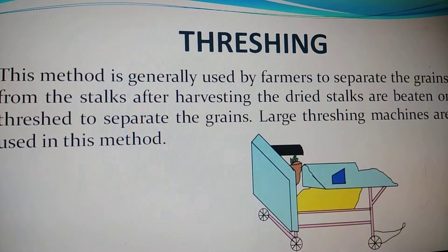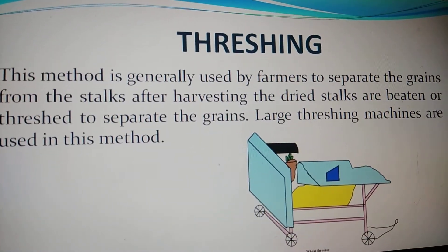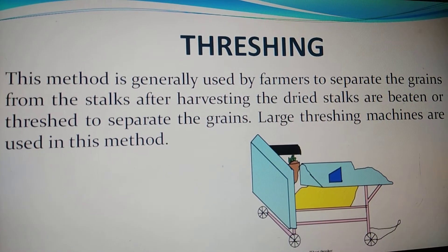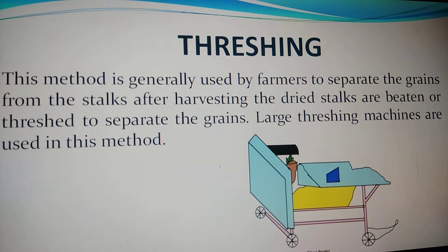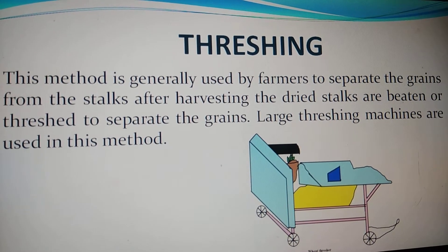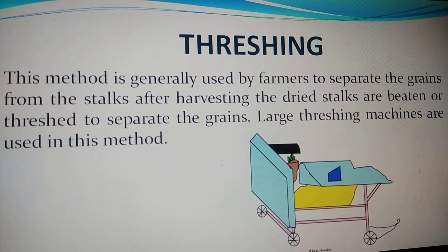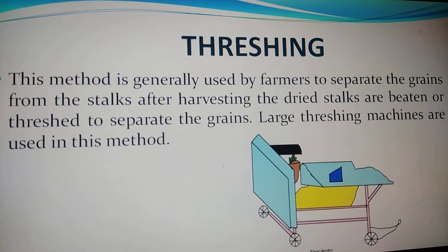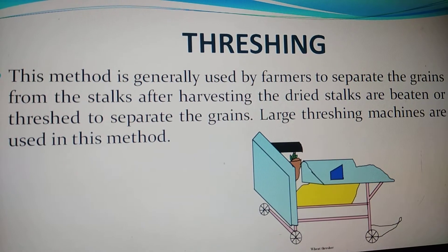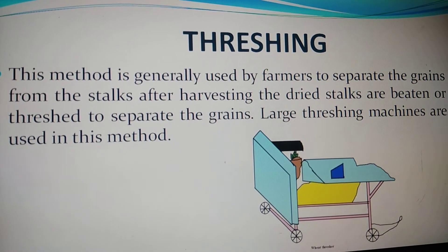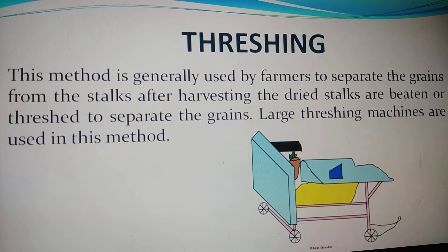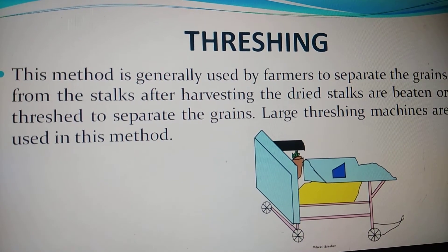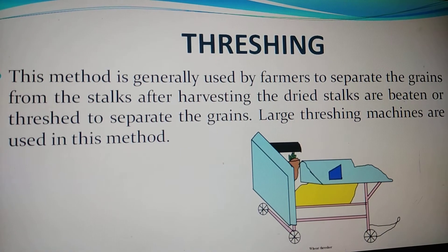The next method is threshing. Farmers use large machines known as threshers to separate out the grains from the stalk. Threshing is defined as the process of separating grains from the stalk after harvesting. Harvesting means separating out grains from the cut or gathered ripened crops. This process is generally done by using threshers.